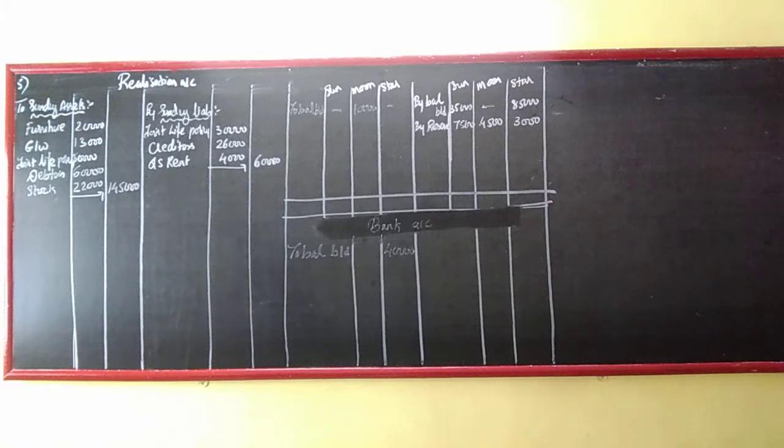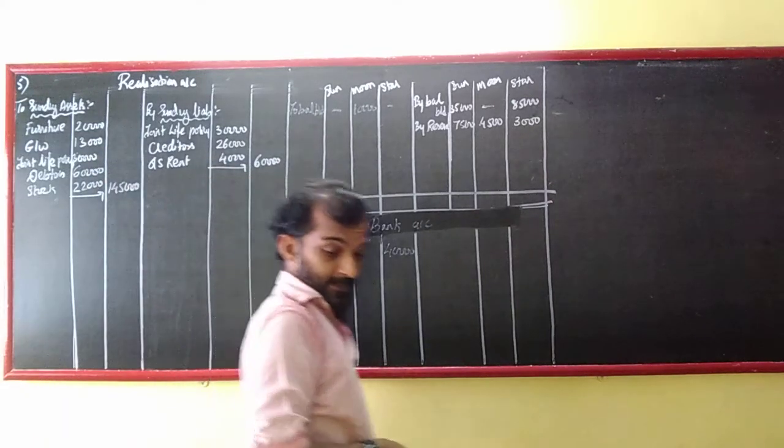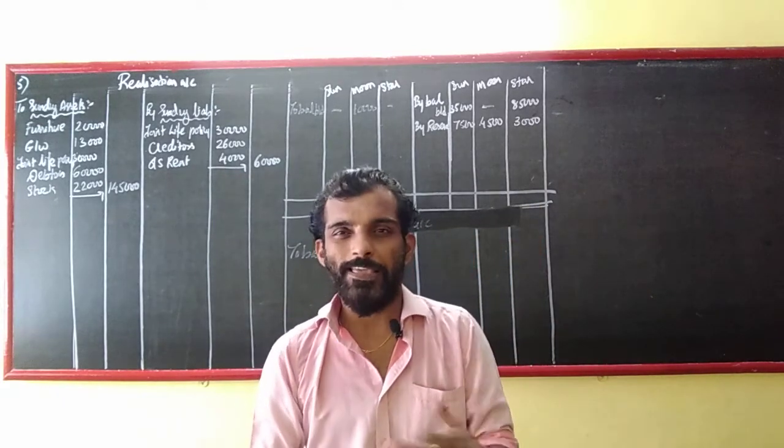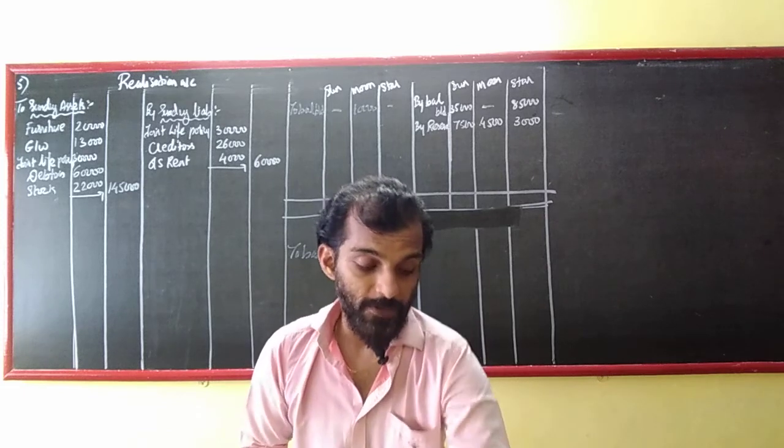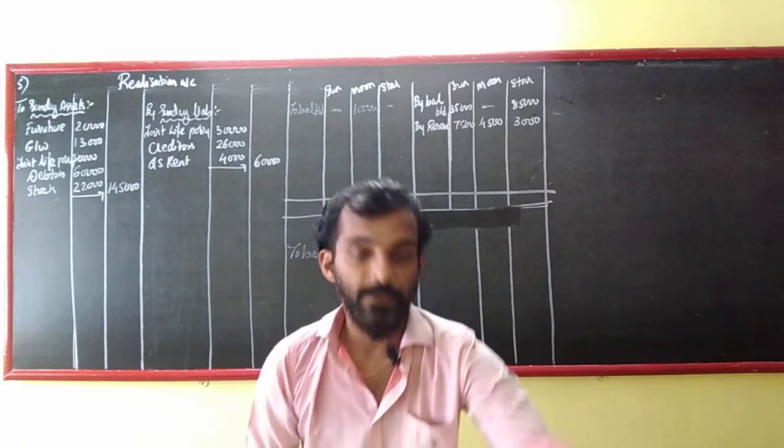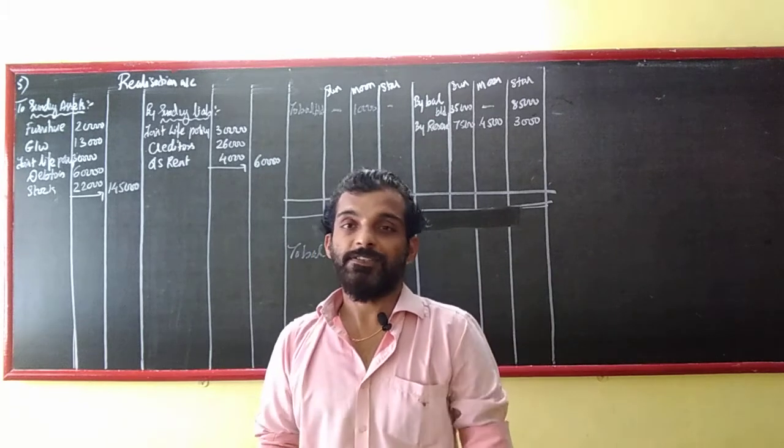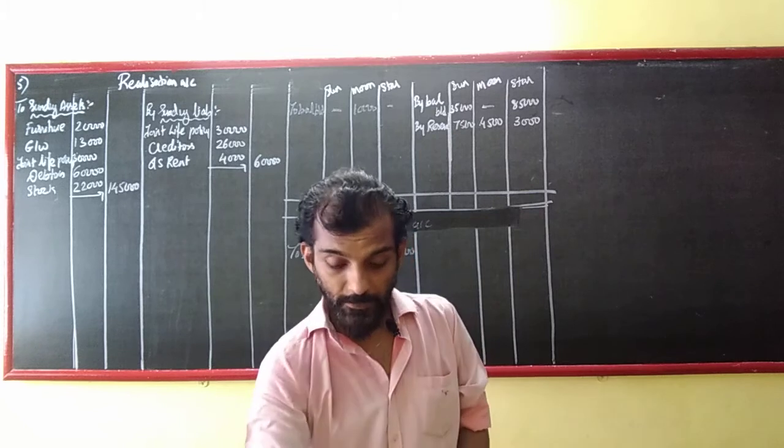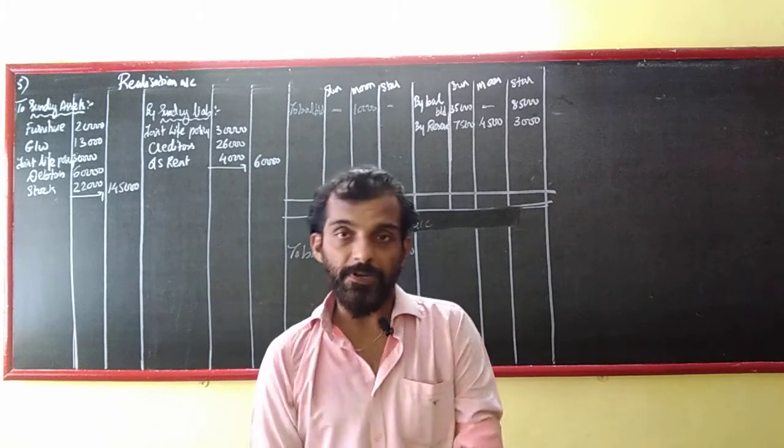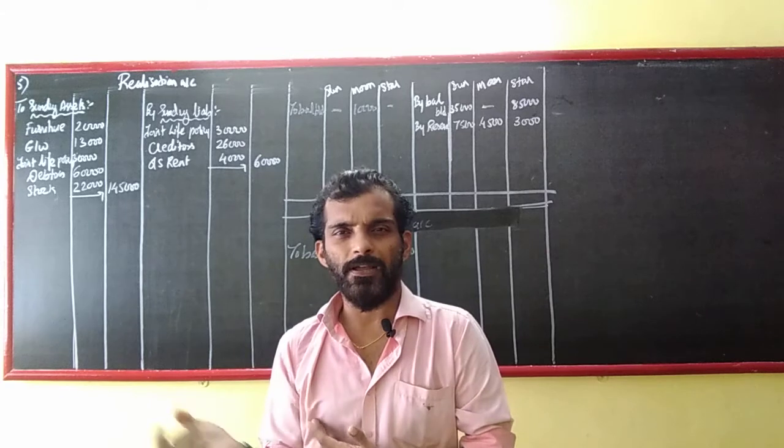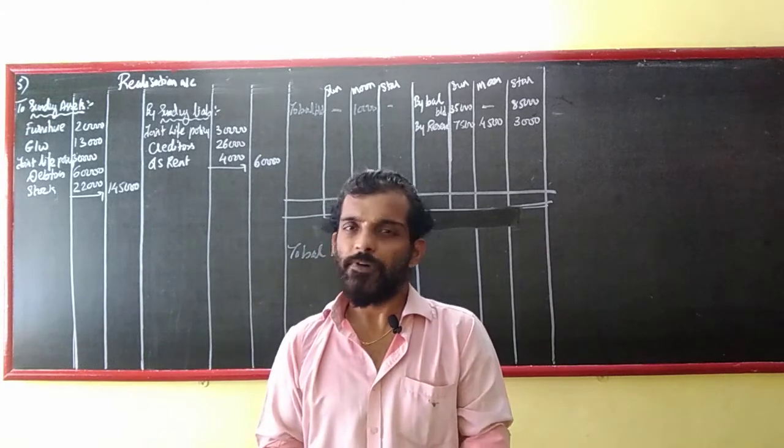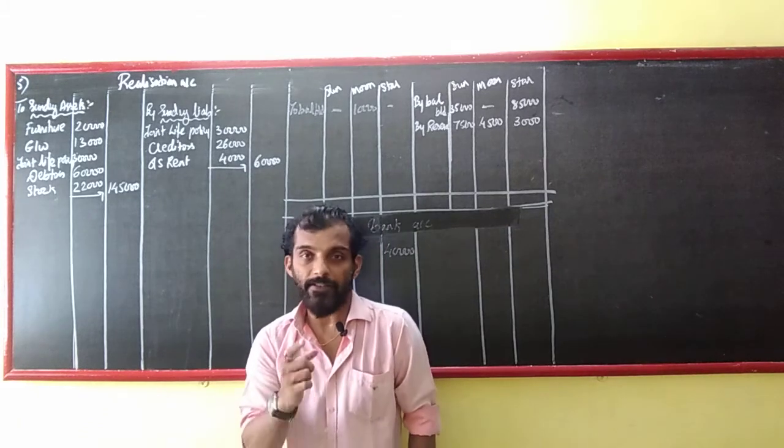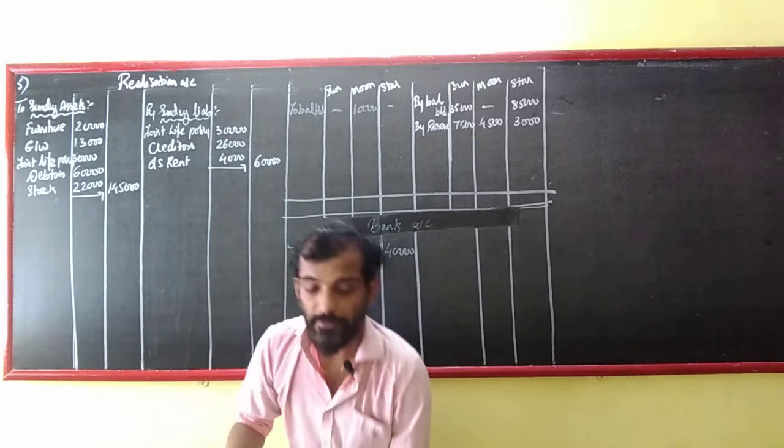Welcome back to my channel Vyoshana. We learn accounts in the easiest and simplest way so that we can remember whatever we learn. This is for SYJC or HSC or 12th standard of Maharashtra, sum number 45. Let me read the question first and then you can understand. I have to keep some simple steps.